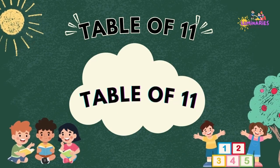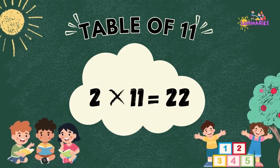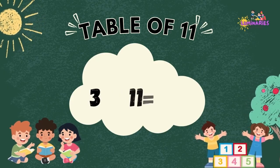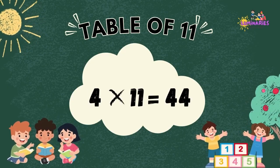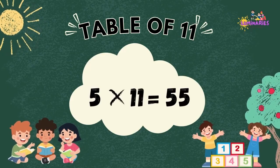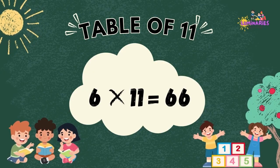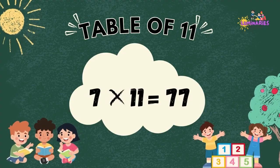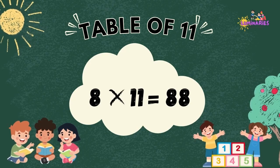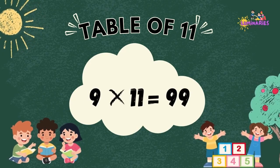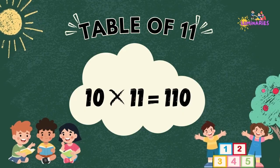Table of 11. 1 x 11 is 11. 2 x 11 is 22. 3 x 11 is 33. 4 x 11 is 44. 5 x 11 is 55. 6 x 11 is 66. 7 x 11 is 77. 8 x 11 is 88. 9 x 11 is 99. 10 x 11 is 110.